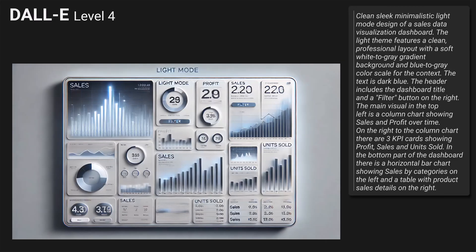Let's move to the level 4 prompt. This is a pretty descriptive prompt. In addition to the previous one it adds a header with a title and a filter button on the right side. In the top left there is a column chart with sales and profit. In the top right there are three KPIs with profit, sales, and units sold. The bottom left should show a bar chart with sales by categories, and the bottom right a table with product sales details. DALL-E on the Bing website failed with this prompt because it was too long, so I created the image in ChatGPT instead. The result is not very accurate — there is no header. We can see some indication of a sales dashboard and some indication of profit and units sold. In the top left there is a column chart and kind of KPI charts in the top right but also other visuals. There is no bar chart on the bottom left and only kind of a table in the bottom right. I like the colors but the neon light effects couldn't be done in Power BI.